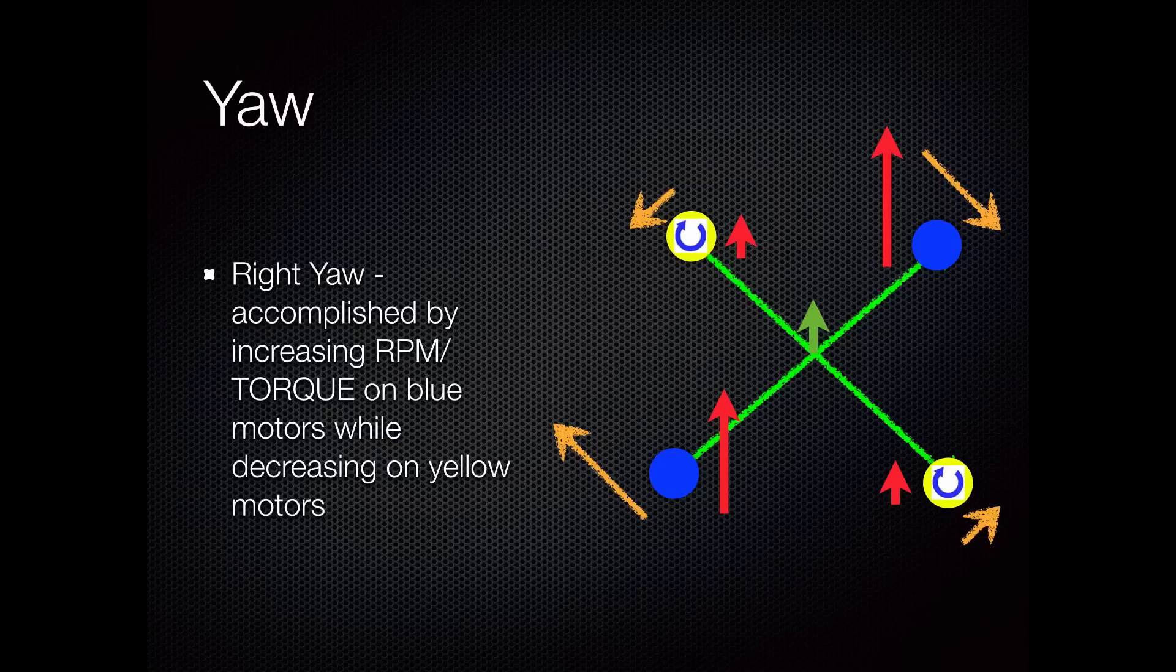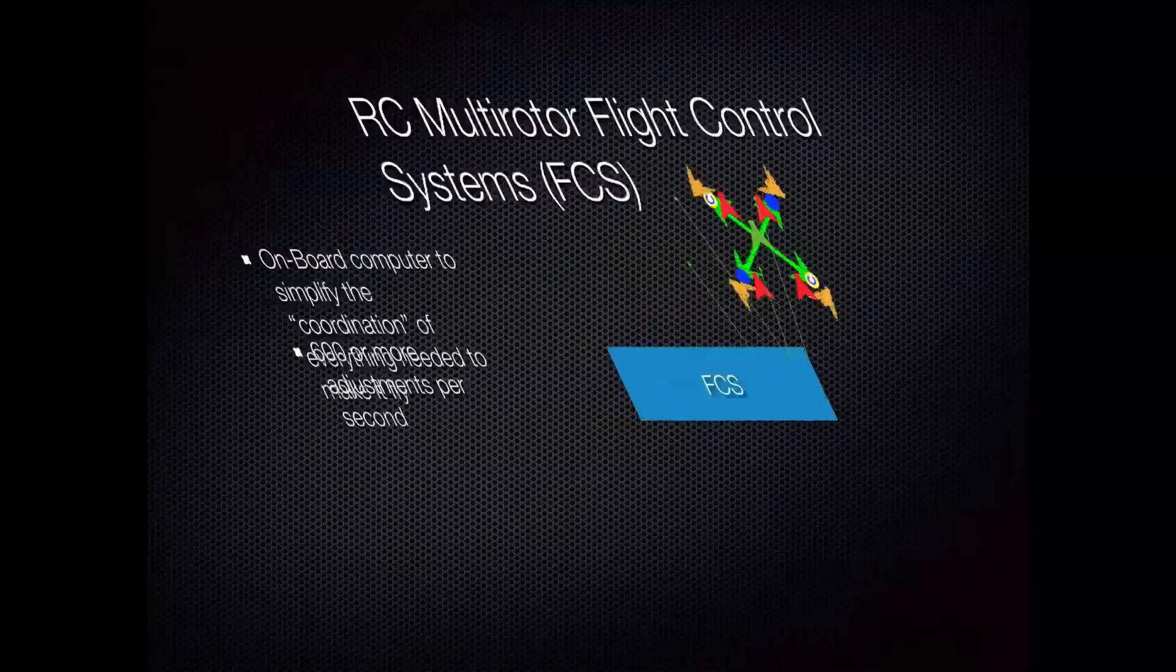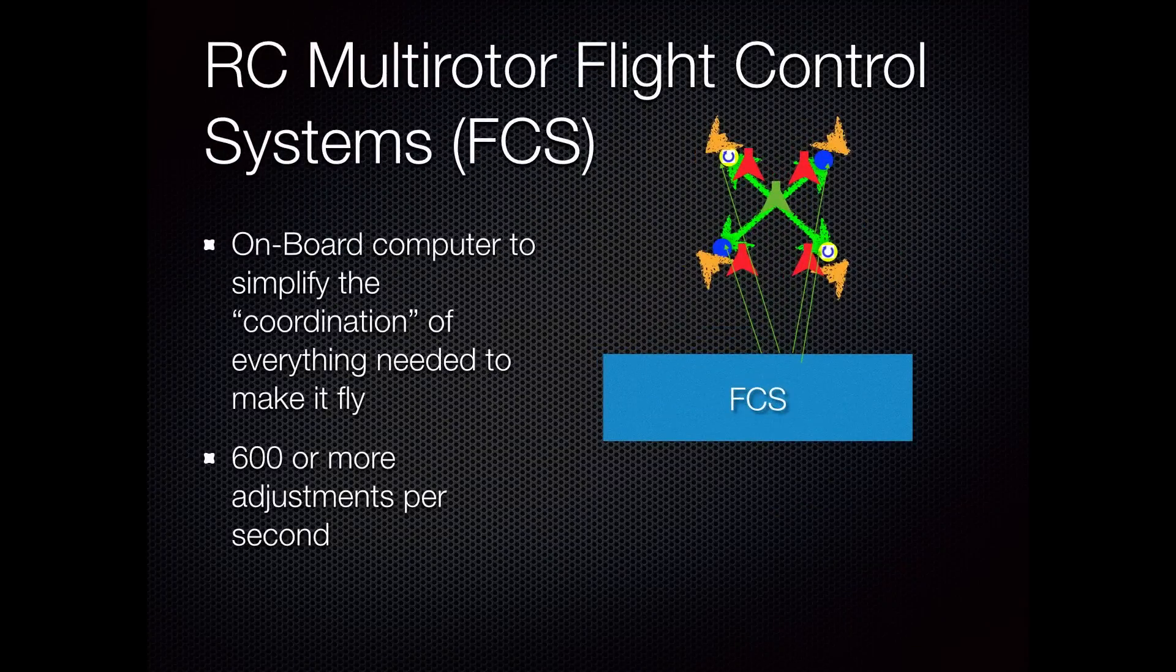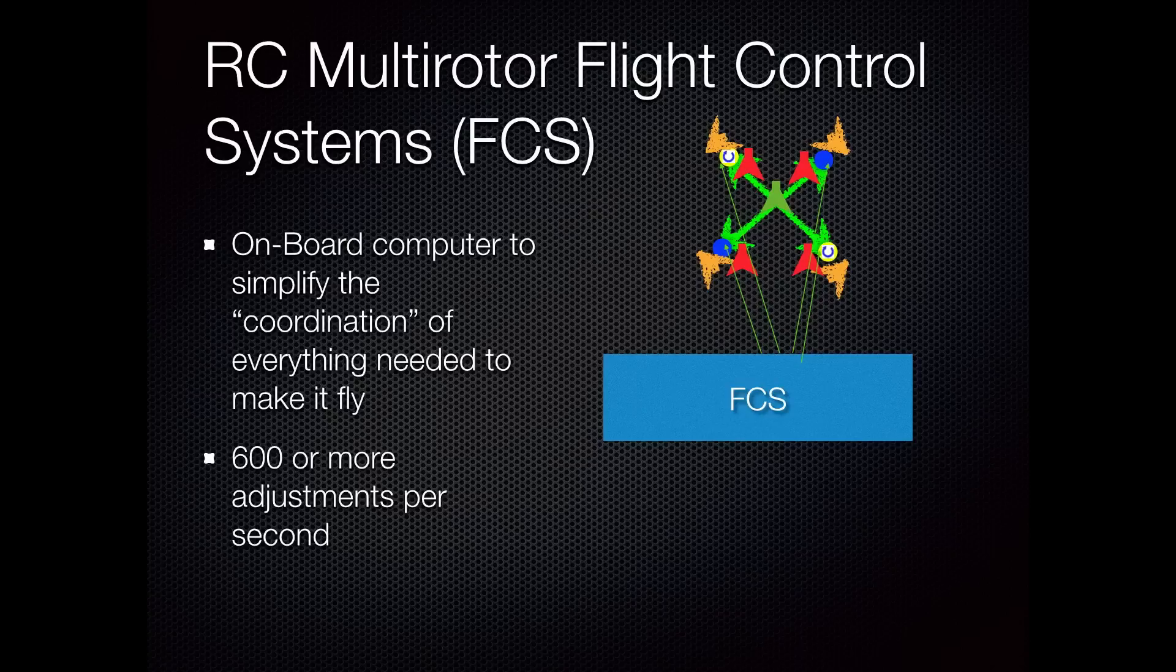A lot of the advanced quad rotors and multi-rotor systems use a flight control system, which is basically a little onboard computer that manages all those control inputs for you. It coordinates all the actions of the motors to orchestrate the symphony, if you will, to keep the thing flying straight and stable.